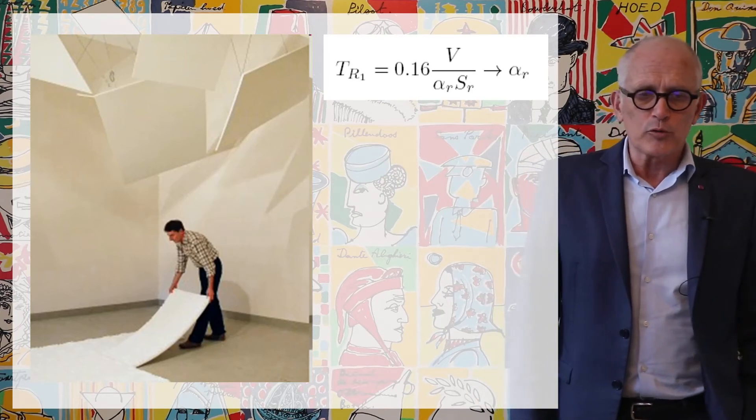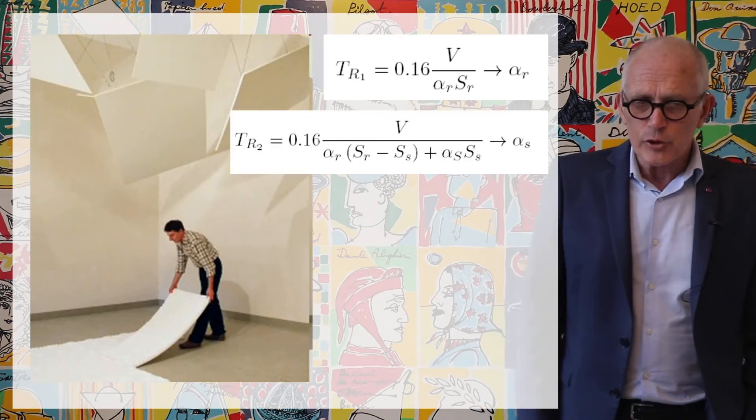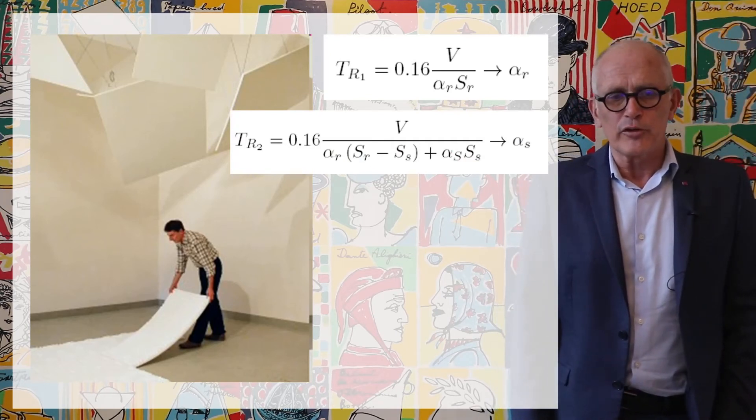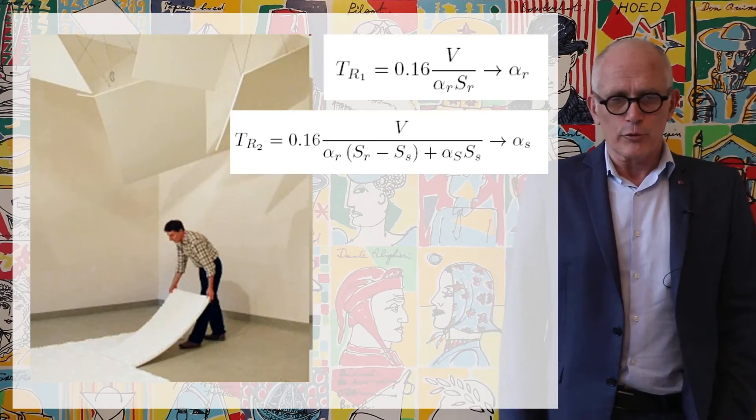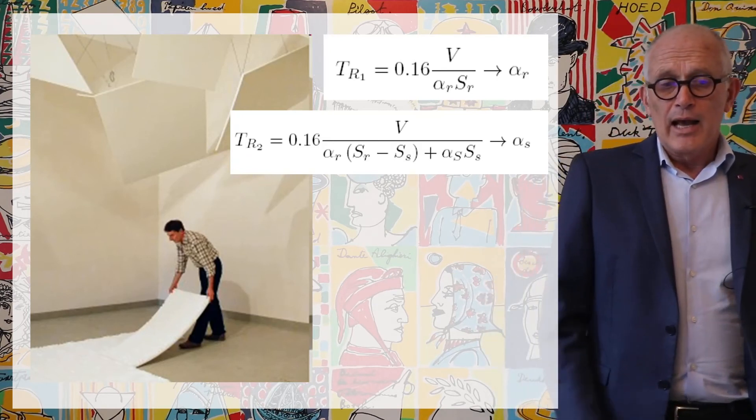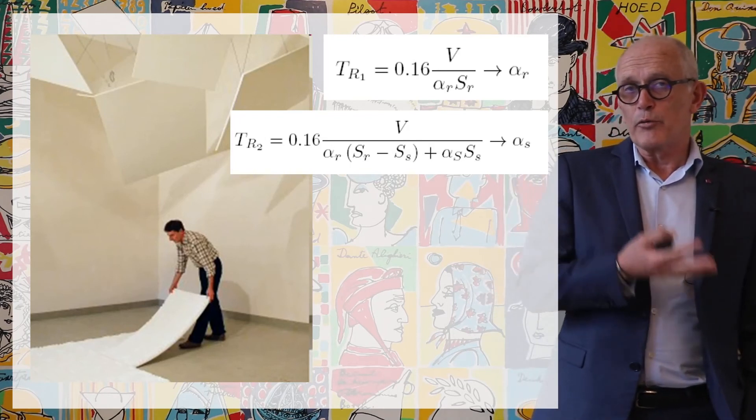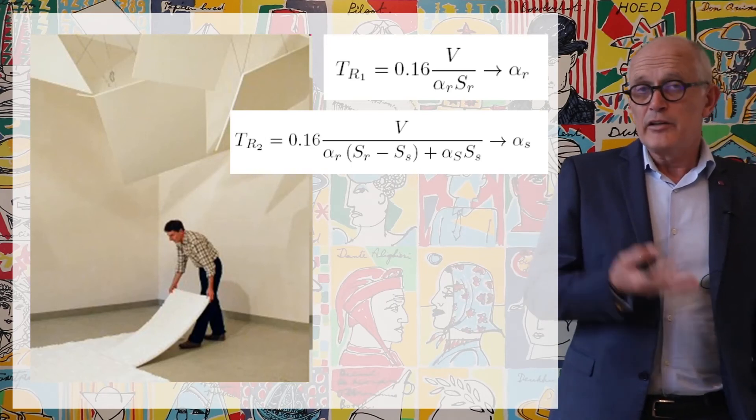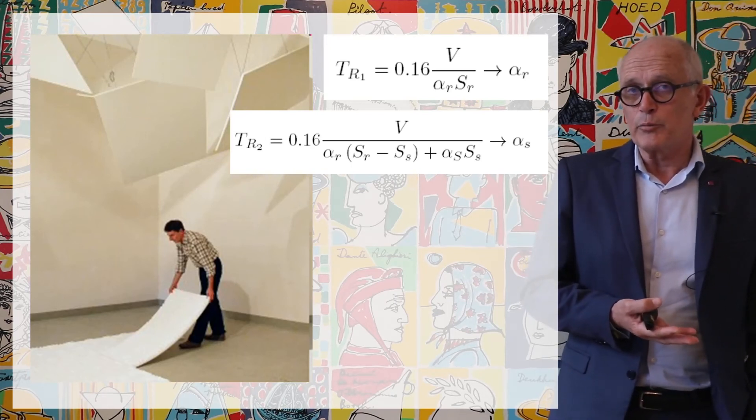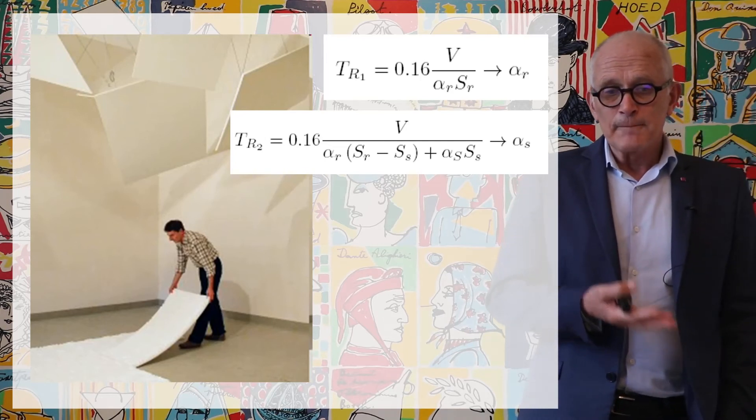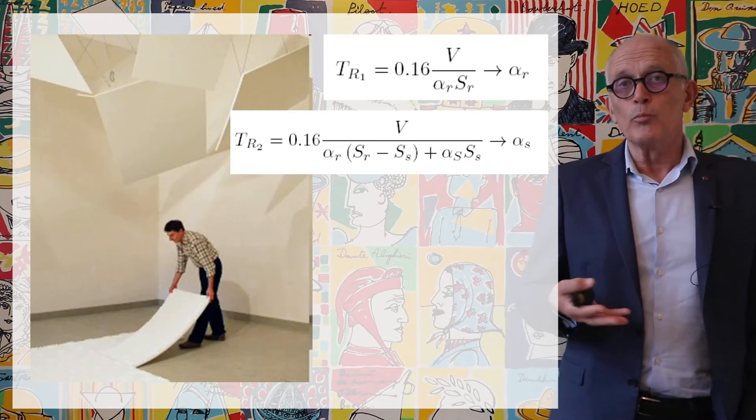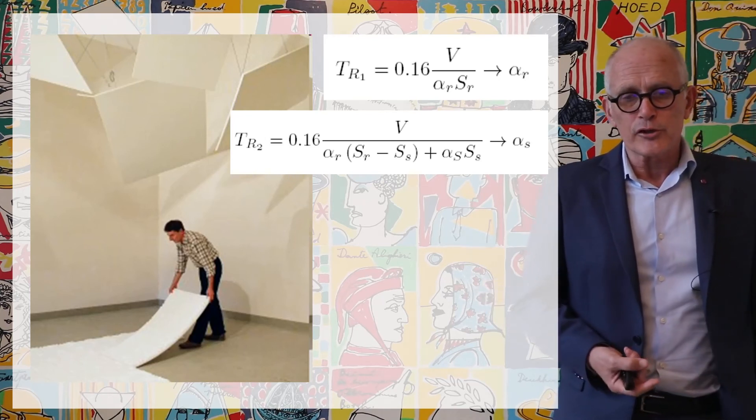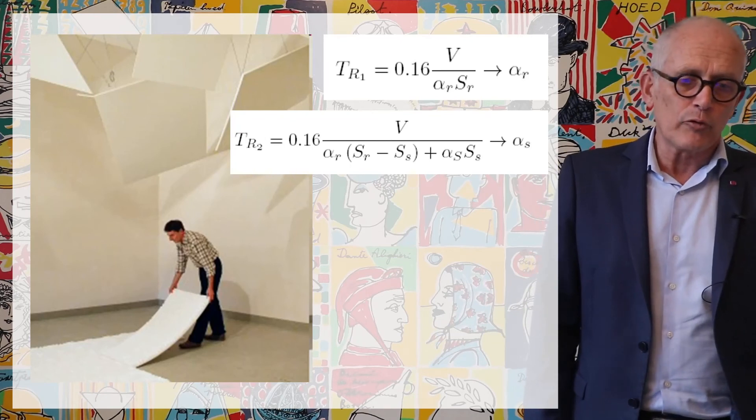Then, as shown in the picture, you place a sample, preferably a large sample of material on the ground, and you re-measure the reverberation time. Now, you know from Sabine's law that the reverberation time is 0.16 times the volume, which hasn't changed, divided by the alpha-R coefficient we obtained from the first measurement, which applies to the surface of the room minus the surface of the sample, plus the unknown absorption coefficient of the sample times the surface of the sample.